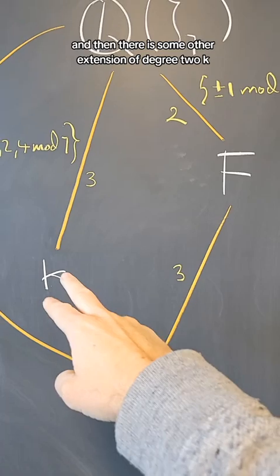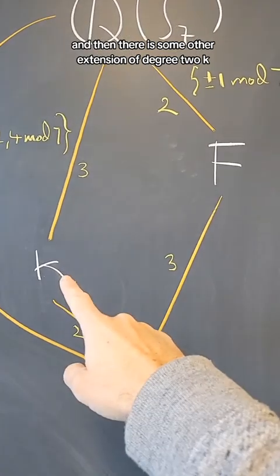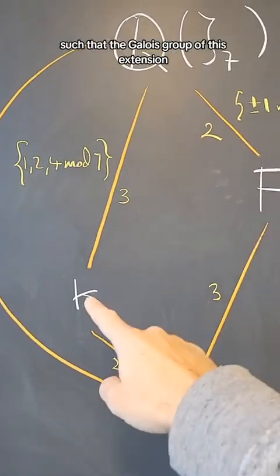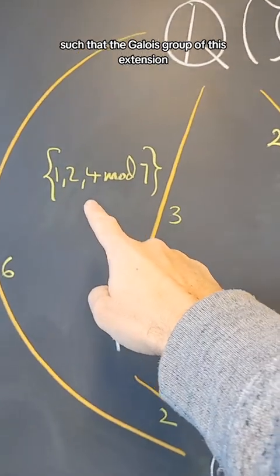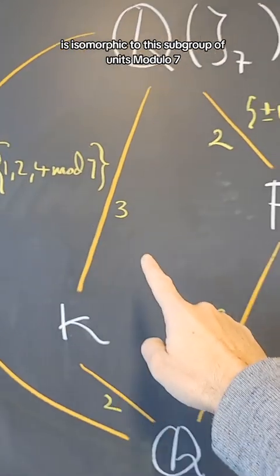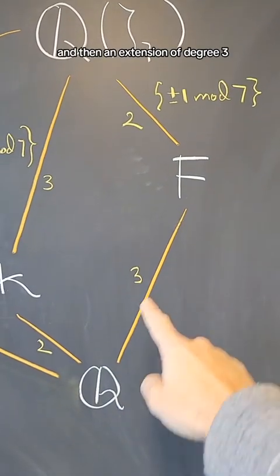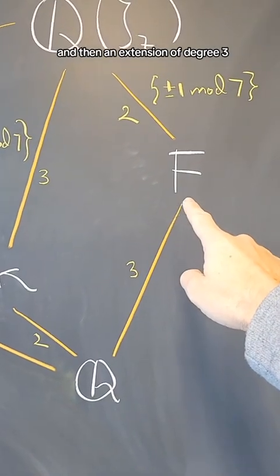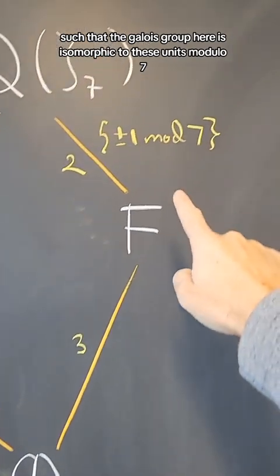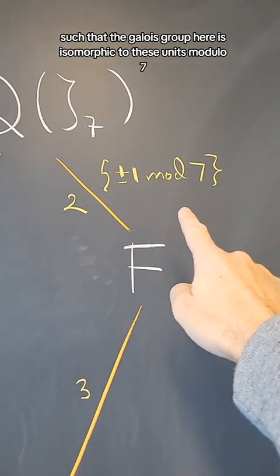And then there is some other extension of degree 2, k, such that the Galois group of this extension is isomorphic to this subgroup of the units modulo 7. And then an extension of degree 3, such that the Galois group here is isomorphic to these units modulo 7.